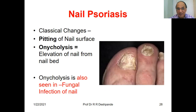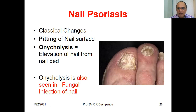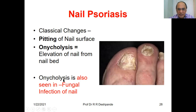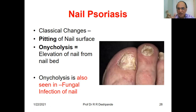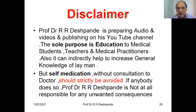Nail psoriasis — classical change: pitting on the nail surface. Onycholysis — elevation of the nail from the nail bed — don't forget this. Onycholysis is also seen in fungal infections of the nail, so you have to compare whether it is psoriatic or a fungal infection of the nail.